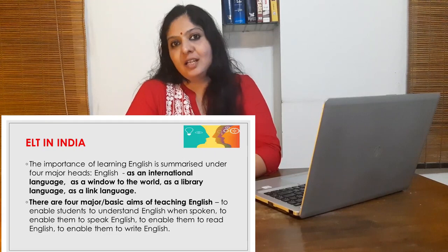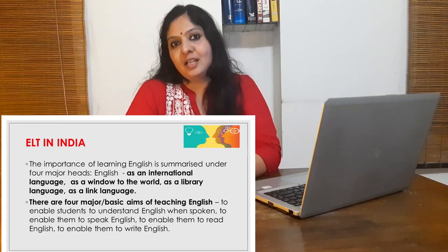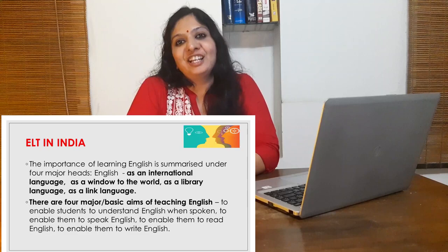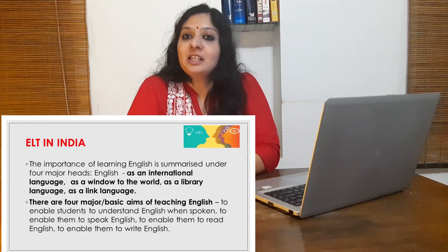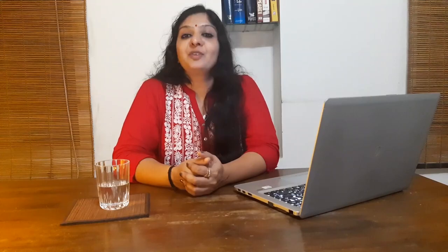There are four major basic aims of teaching English in India: to enable students to understand English when spoken, to enable them to speak in English, to enable them to read English, and to enable them to write English. Though productive measures are adopted to teach English in India, the conditions under which English is taught and learned are sometimes far from satisfactory. There is still a persistent cry about the falling standard of English. Identified causes include lack of clear-cut policy on the aims of teaching English, dearth of competent teachers, wrong methods of teaching, defective textbooks, a faulty examination system, insufficient use of audio-visual aids, overcrowded classrooms, and shortage of time.